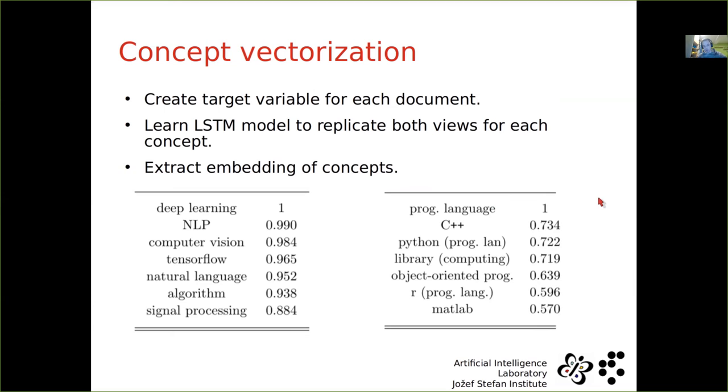The same story goes with programming language. We select programming language, and we want to see what is close to this concept. So we get C++, we got Python, we got library, we got object oriented programming, R, MATLAB, and so on. So what we can see here that we created a very good semantic representation of our space. So how does this benefit us?